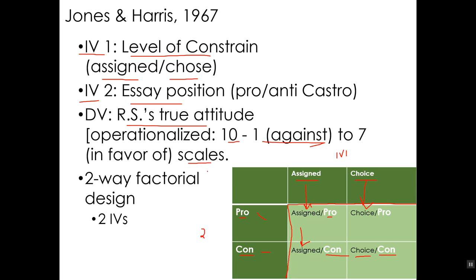The scales included items such as: how much do you support Castro, how much do you think Castro is doing a good job with Cuba, is Cuba a friend of America. They just added up those ten scales, so you could have a score from 10 to 70 — 70 being totally in favor of Castro, 10 being totally against it.